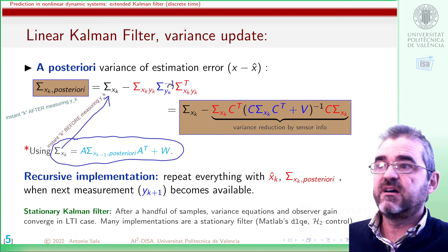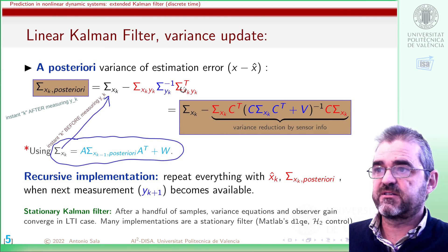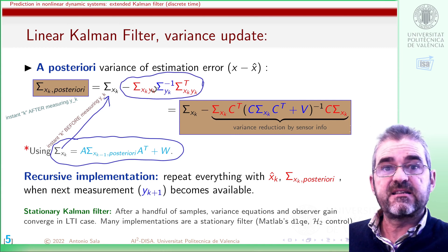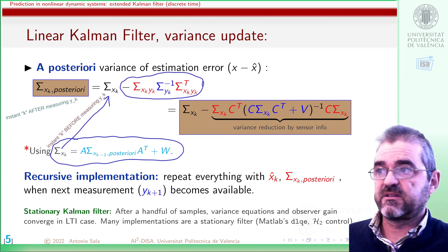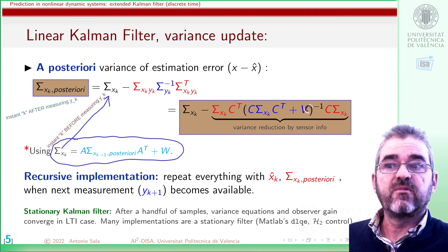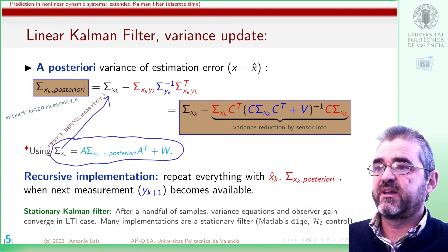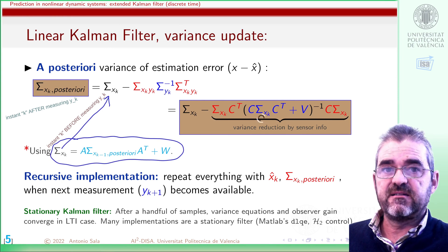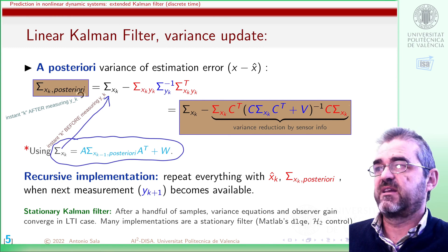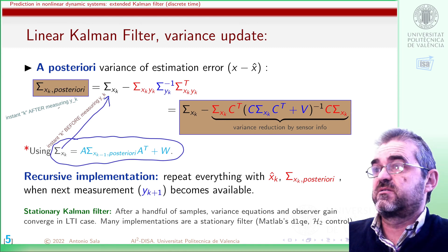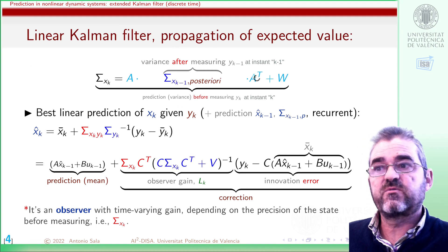And then covariance times inverse of information variance times covariance is the uncertainty reduction I can achieve thanks to my measurement. Replacing covariance and the variance of the information with the actual expressions for a linear process, we get the expression in the brown square regarding the variance update after measurement. So then I have the variance of k after measurement, and I can just propagate to the next instant with this formula.